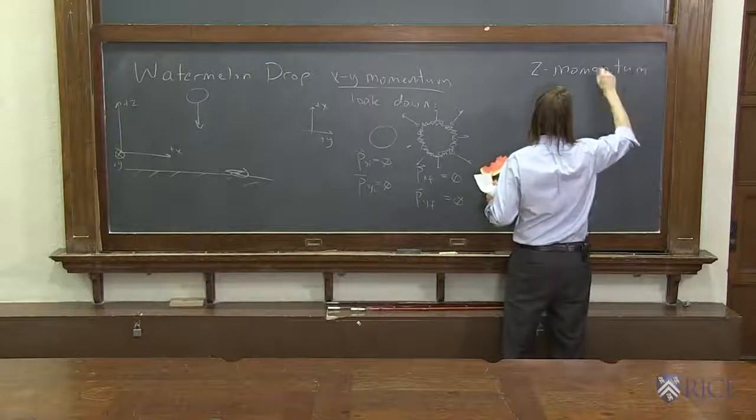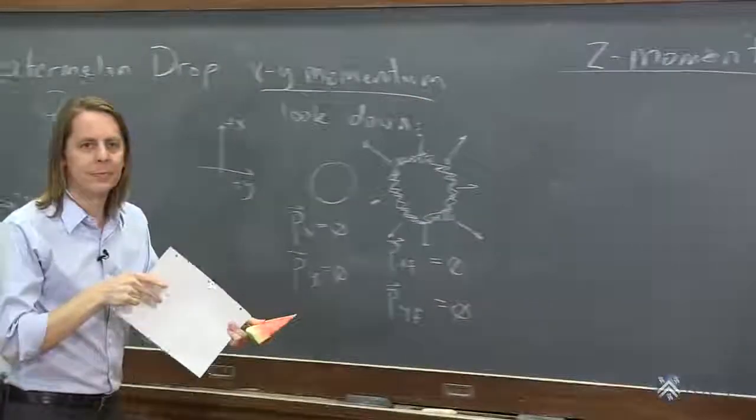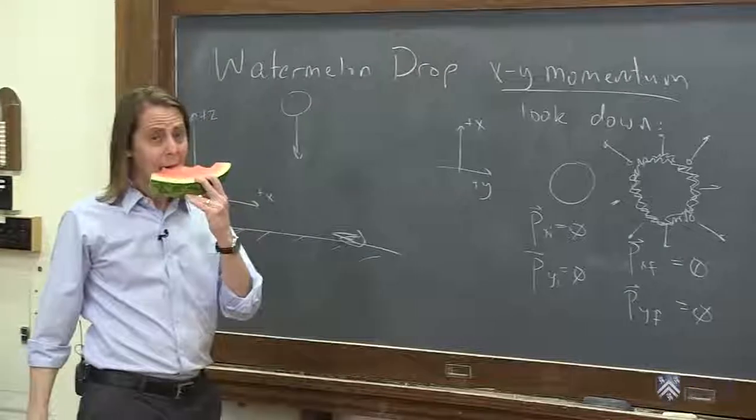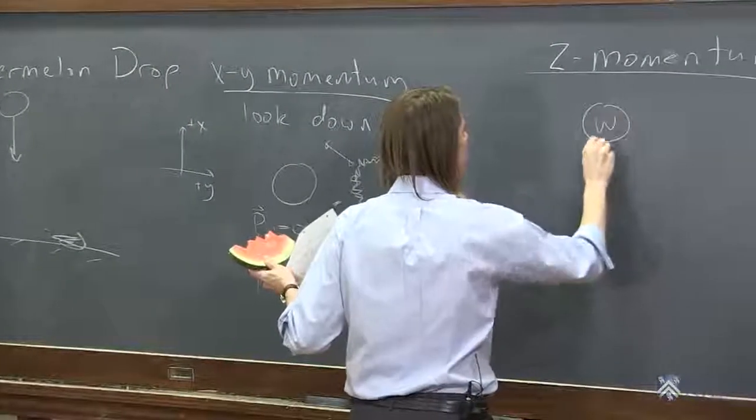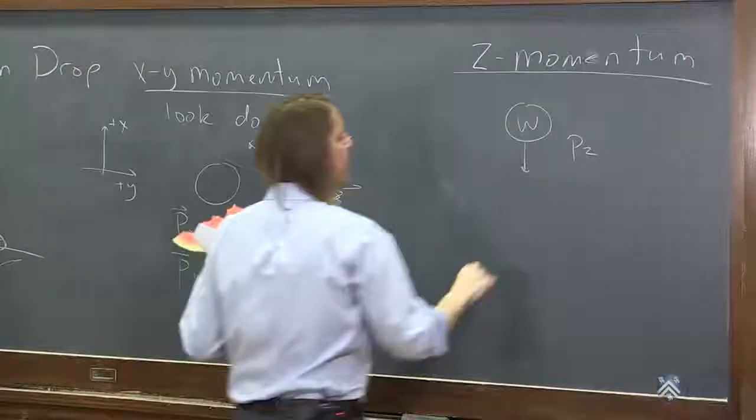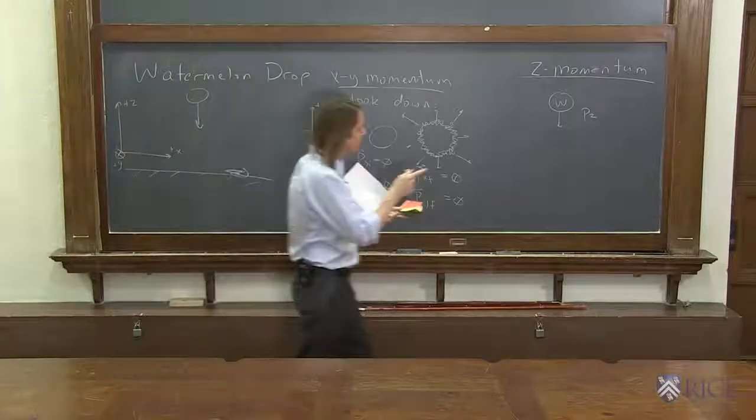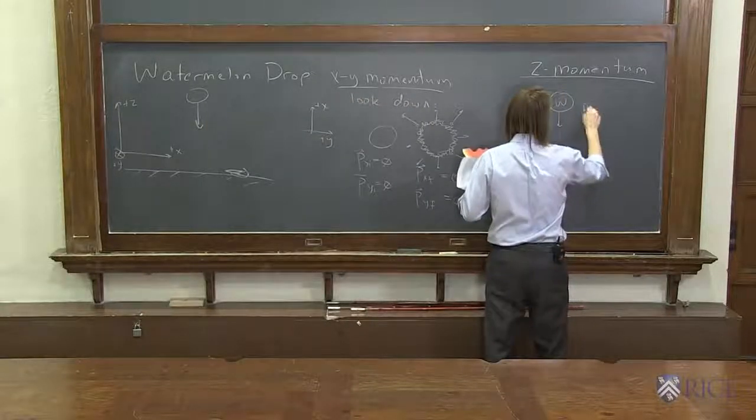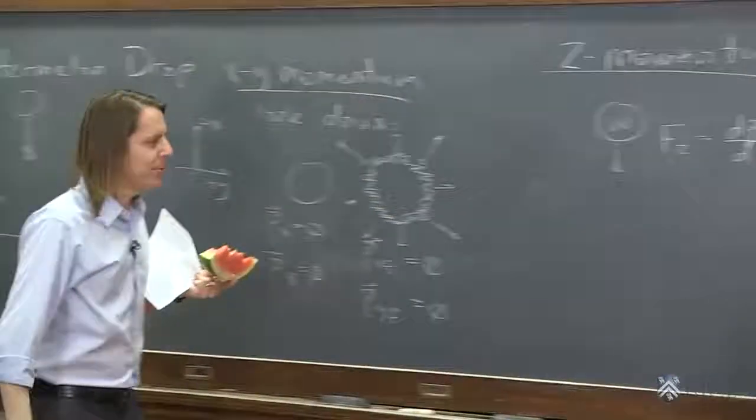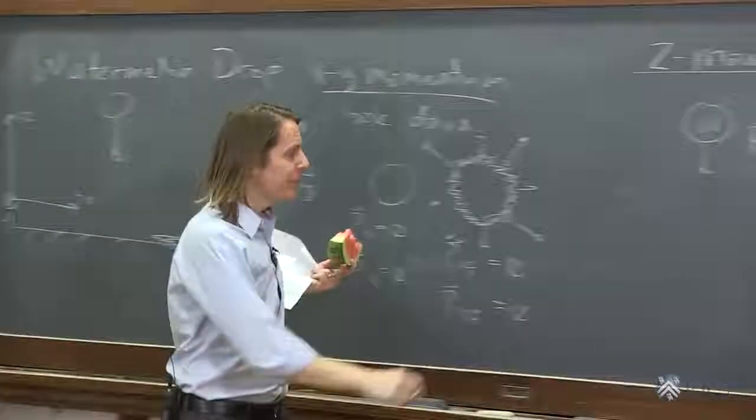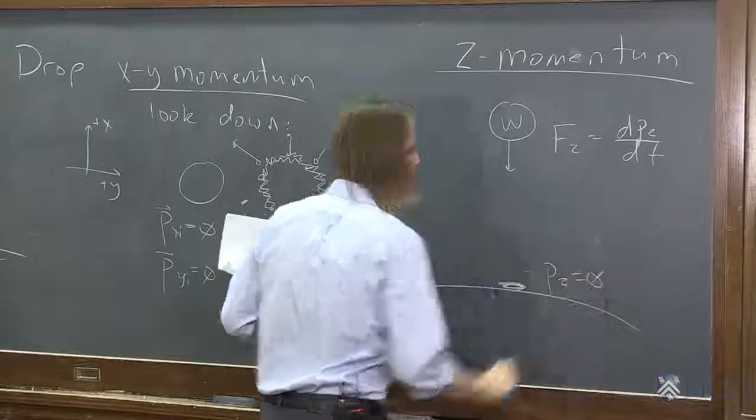This is where it kind of looks like we violated conservation of momentum, because the thing stopped. So we look in the z, the watermelon was falling, it was speeding up, had a big value of p_z. And that value of p_z was changing in time, actually, right? So there was a force in the z due to gravity, dp_z/dt, getting bigger, bigger, bigger. It was very big until it hit the surface of the earth and then splat. And then p_z equals zero.